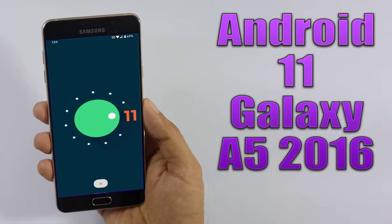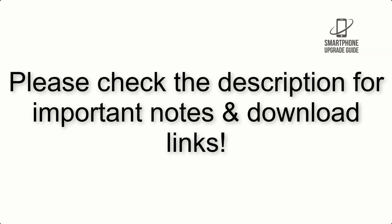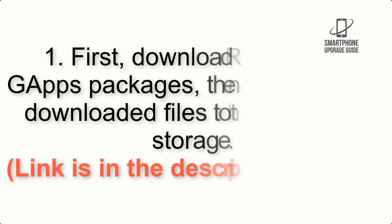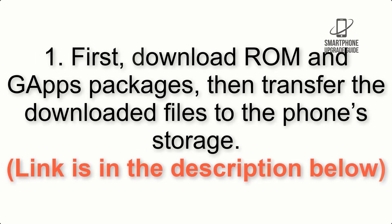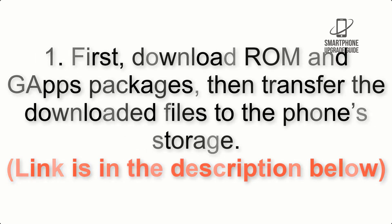Install Android 11 on Galaxy A5 2016 via Lineage OS 18.1. Please check the description for important notes and all the download links. First, download the ROM and GApps packages, then transfer the downloaded files to the phone storage. The link is in the description below.